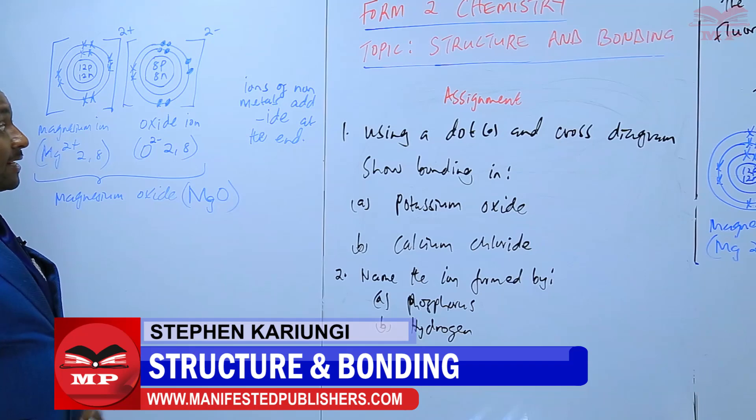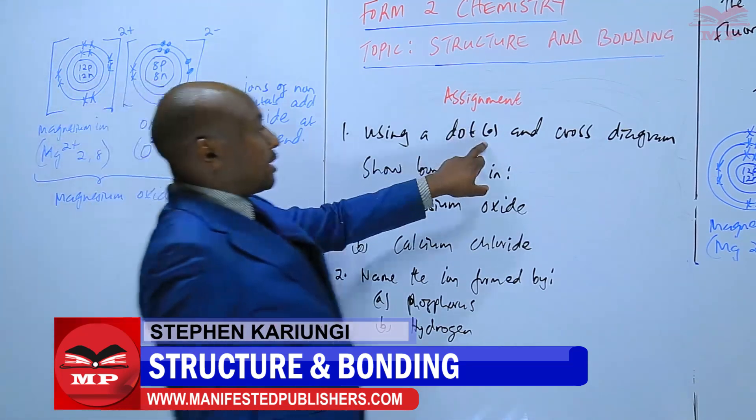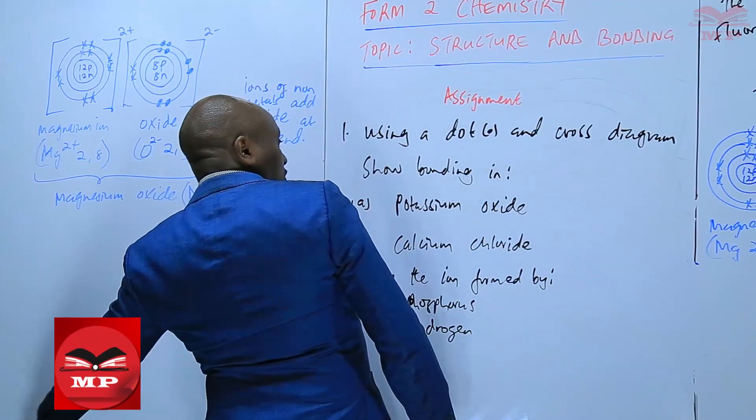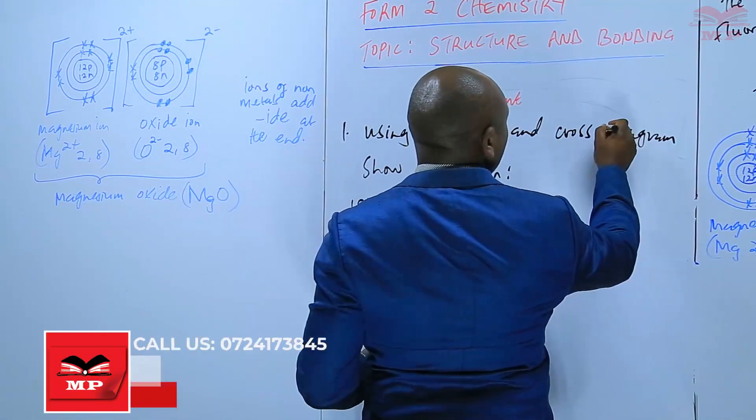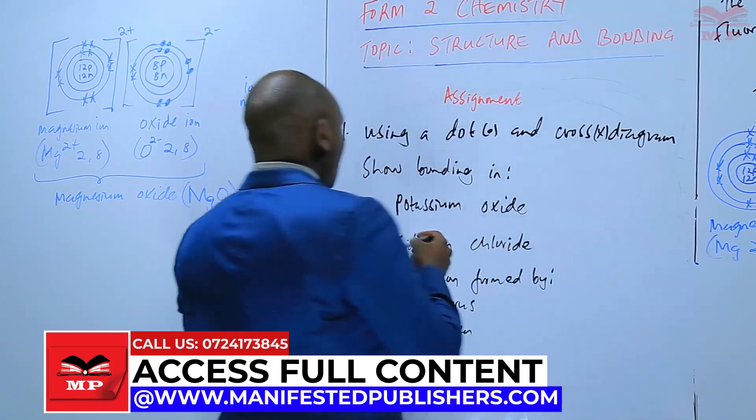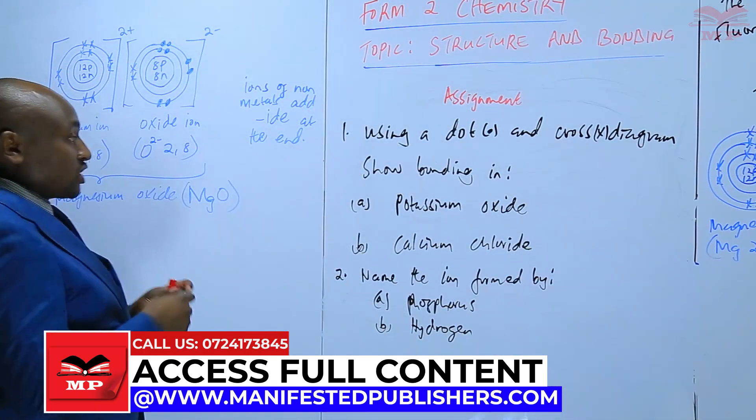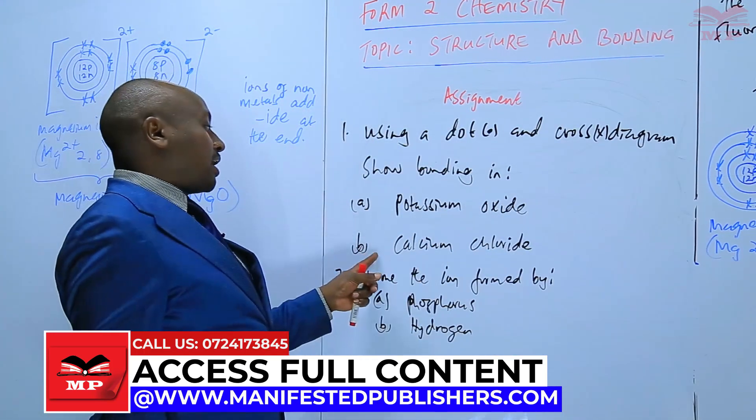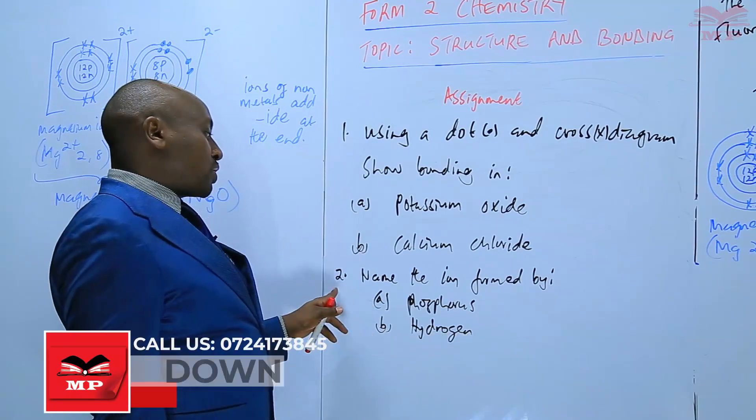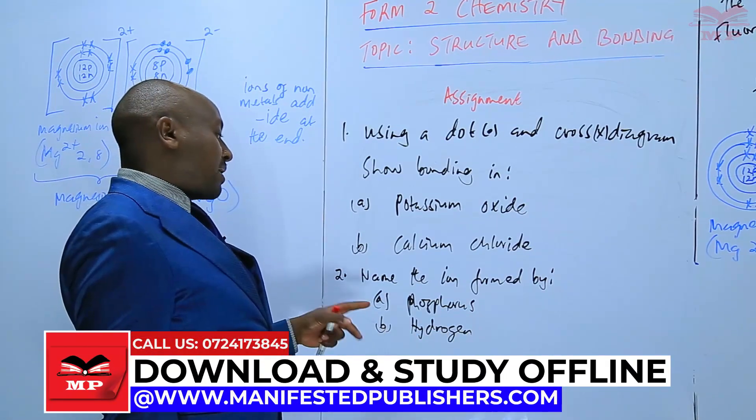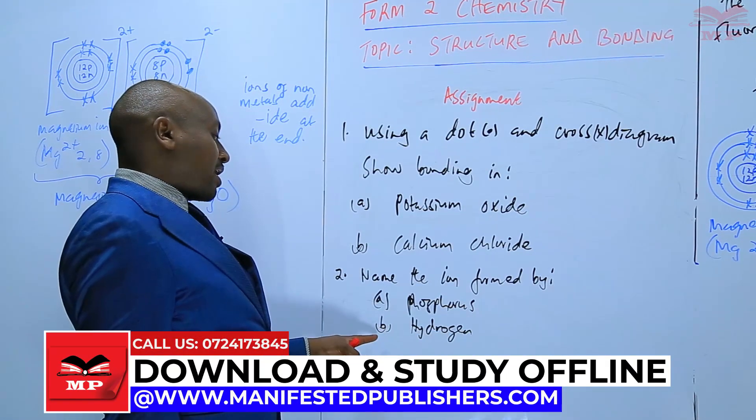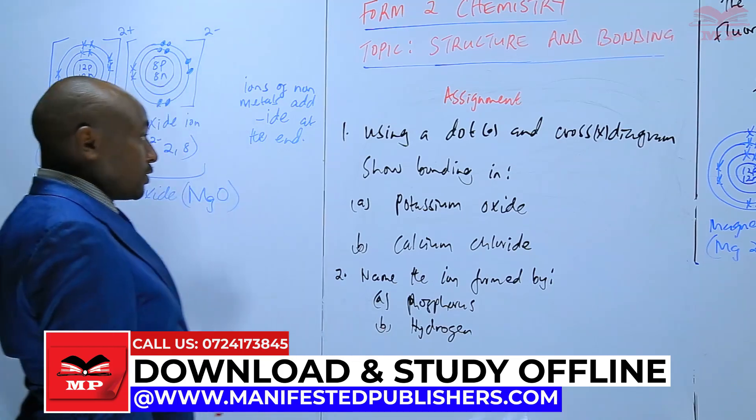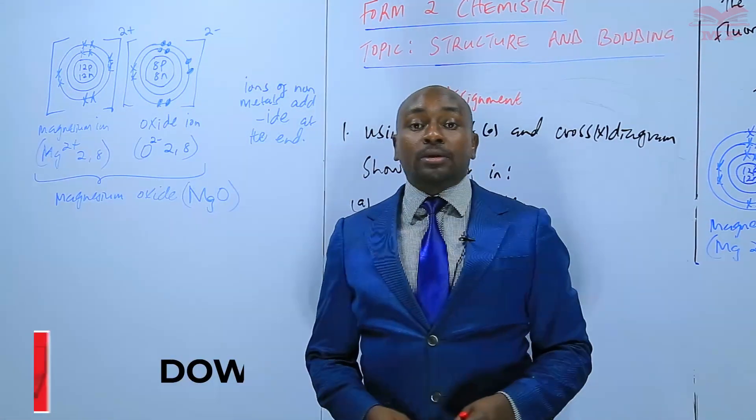The assignment, the first question: using a dot and cross diagram, like the ones we are drawing, show bonding in potassium oxide, calcium chloride. Number two, name the ion formed by phosphorus and hydrogen. We are going to stop there. Until the next time, goodbye.